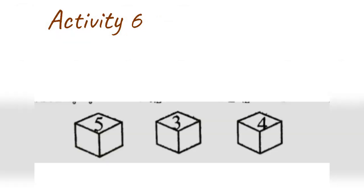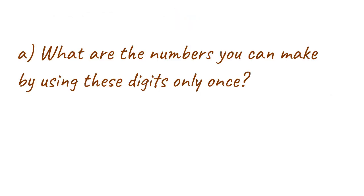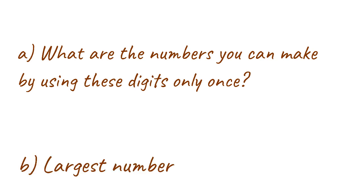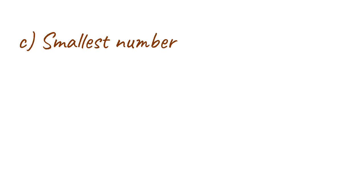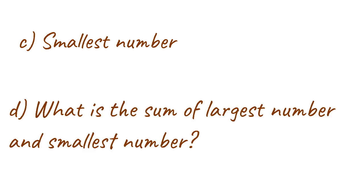Activity 6: Cube. A. What are all the numbers you can make by using these digits only once? B. Find the largest number. C. Find the smallest number. D. What is the sum of the largest number and the smallest number?